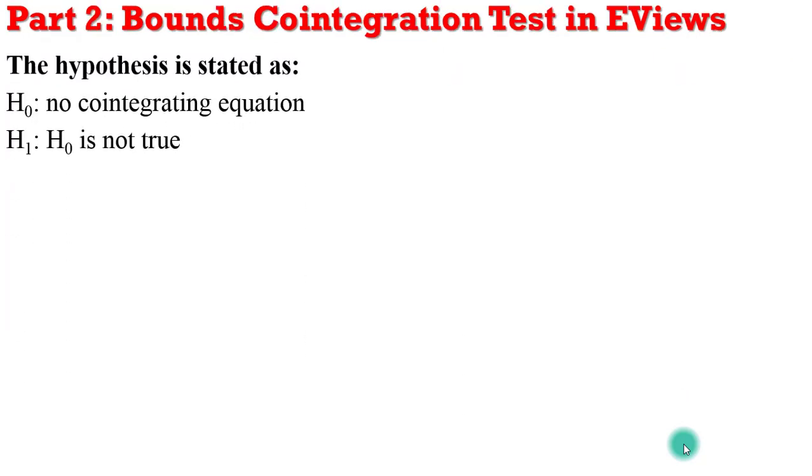What is the null hypothesis of this test? The null is that there is no cointegrating equation, while the alternative simply states that the null is not true.